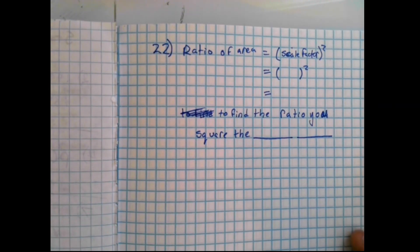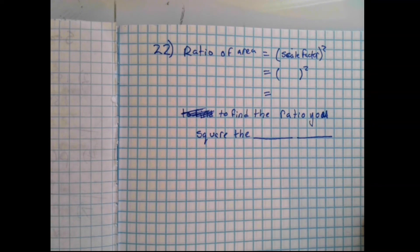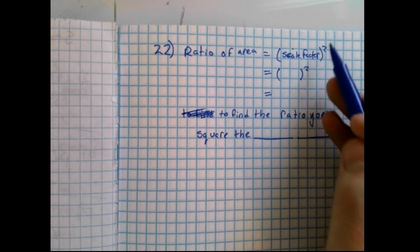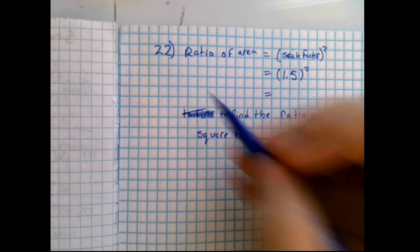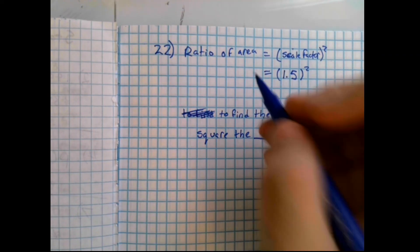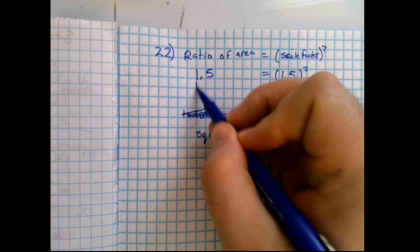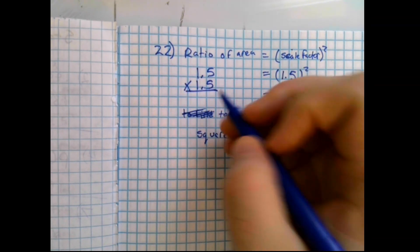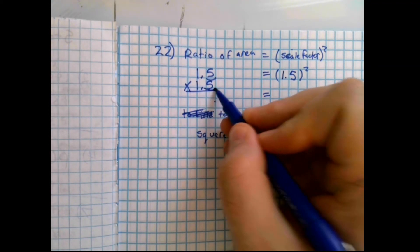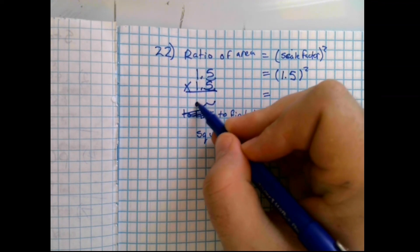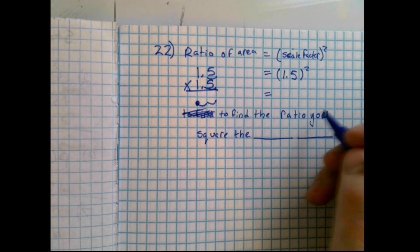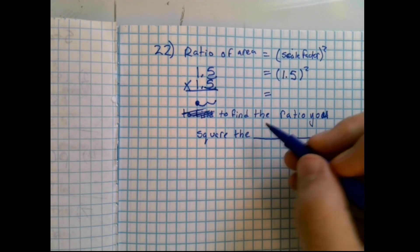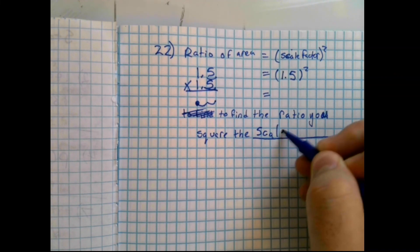22 is dealing with the same trapezoid. It says, what is the ratio of the areas as a decimal? Well, the ratio of the areas is the scale factor squared. We just found the scale factor was 1.5. So we're going to do 1.5 squared. If you know the answer to this, then you can write it down. If you're not sure, 1.5 times 1.5. Do your multiplication. Remember that since there's a digit behind the decimal, a digit behind the decimal, there needs to be two digits behind the decimal when you get your final answer. Now, to find the ratio, what did we do? Well, we squared the scale factor.